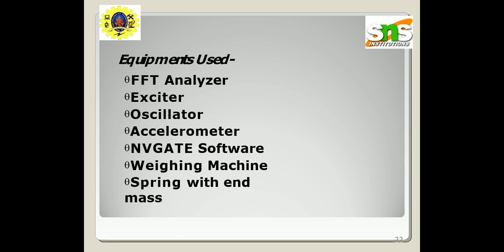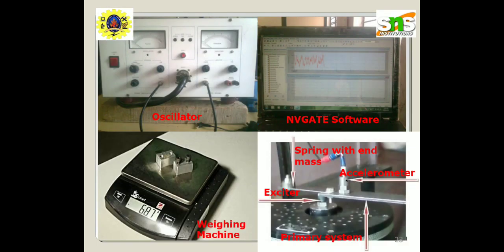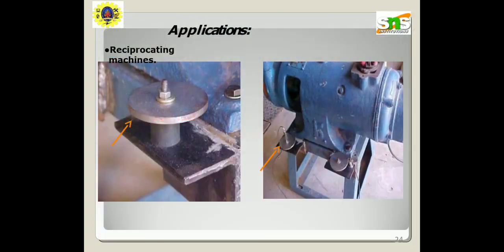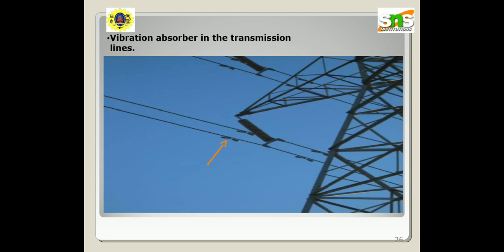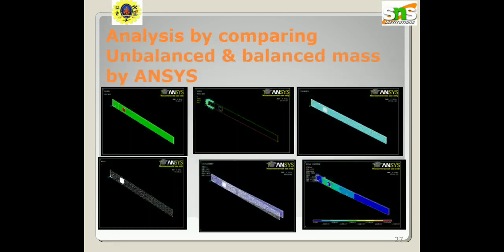In buildings and related structures, tuned mass dampers consist of huge concrete blocks or steel bodies mounted in skyscrapers. The experimental systems include oscillator, Nvis software, weighing machine, and primary and secondary systems connected together. Applications include reciprocating machines, vibration absorption in transmission lines, analyzing unbalanced and balanced mass analysis systems, and measuring mechanical, human, and wind vibration sources and their generated frequencies.